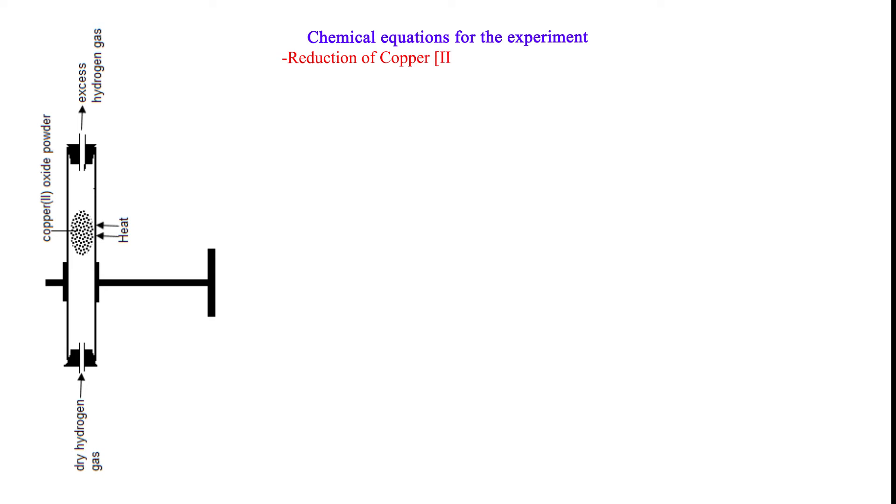Chemical equations for the experiment: reduction of copper(II) oxide by hydrogen gas.